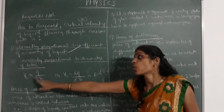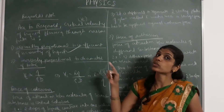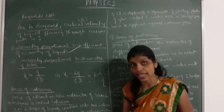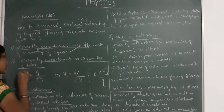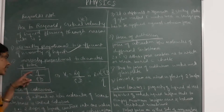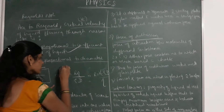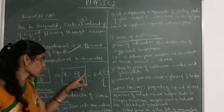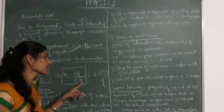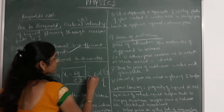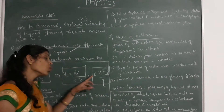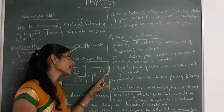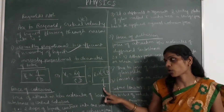How is critical velocity and Reynolds number represented? Critical velocity Vc is directly proportional to the coefficient of viscosity η, and inversely proportional to density ρ and diameter d. That is given by the formula: Vc is directly proportional to η divided by ρ times d. Or, Vc times d equals R times η divided by ρ times d, where R is the Reynolds number, ρ is the density, and d is the diameter.